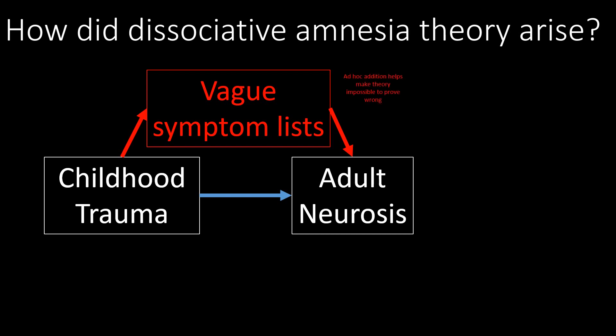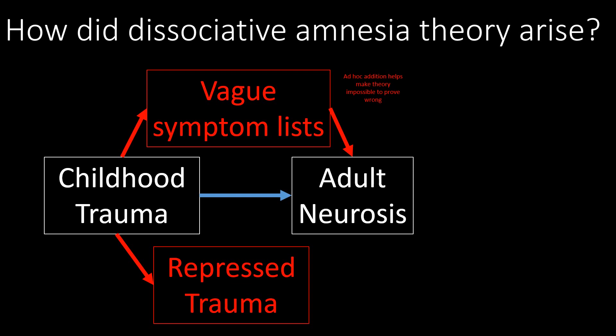Similarly, and more importantly, repressed trauma is an invisible type of trauma that helps preserve this theory. It's an ad hoc addition that makes the theory impossible to prove wrong. If someone comes into your practice with severe neurosis — depression, headaches, whatever — and reports no childhood trauma, that would formally disconfirm your theory. However, by introducing the invisible entity of repressed trauma, you can claim these individuals must have repressed trauma, and your theory that trauma causes neurosis is still maintained.